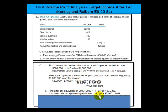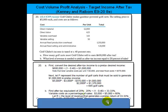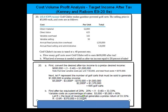Since variable cost as a percentage of sales is $3,000 out of $5,000, we know variable costs are 60% of sales. Now if we let R equal the level of revenue that would generate a pre-tax return of 33.3%, we can set up this equation: Revenue minus 60% R minus $370,000 should equal 0.333R.